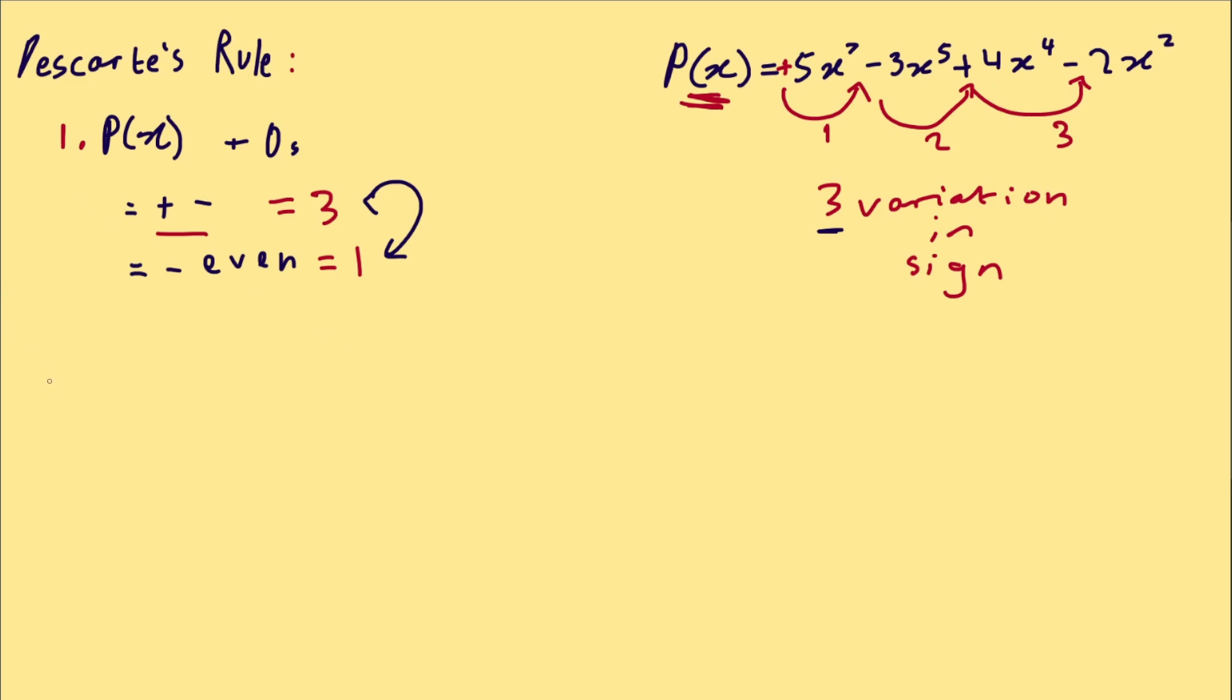Now, how about the second part? The second part is pretty much the same thing, but for negative zeros. So instead of counting variations in sign in P(x), like you do here, you're counting it in P(-x).